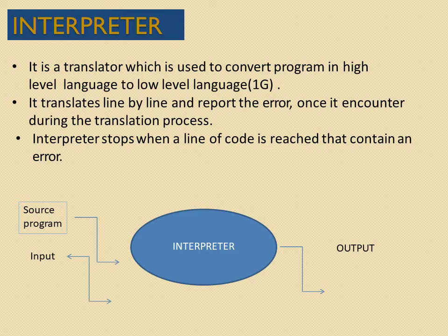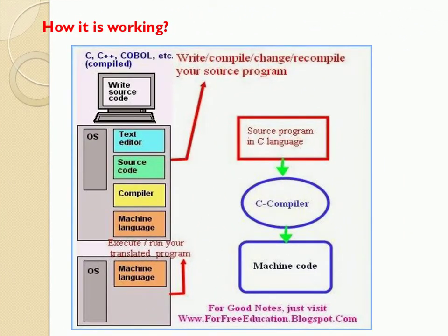The source code is converted into low level language — let me explain how this translator works. A source code is written in a computer using a text editor, and the source code is sent to the compiler to convert into a low level language. That low level language is then sent to the processor. The processor processes it and gives output in terms of low level language, but this output cannot be understood by the user. So the output is sent back to the compiler, which converts the low level language to high level language so that the user can easily understand the output.